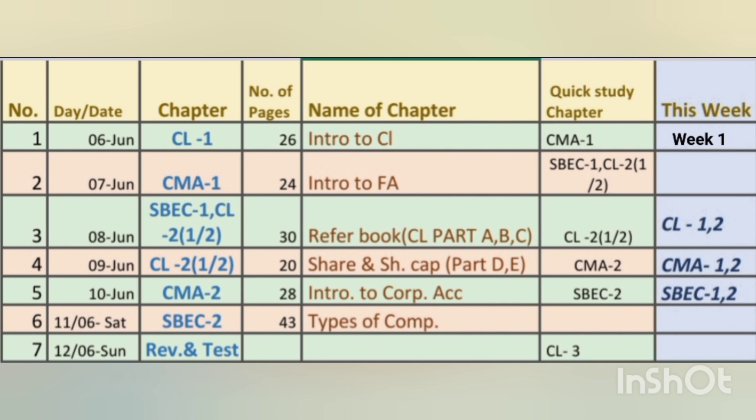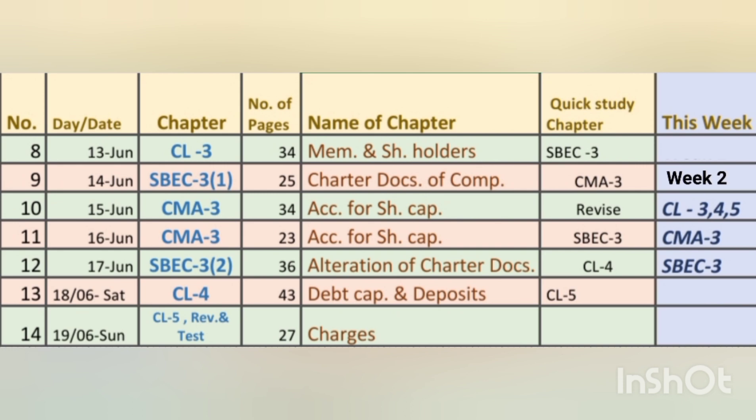In the first week we will be studying six chapters: CL first two chapters, CMA first two chapters, and SBC first two chapters. We will have revision and test of all these chapters at the end of the week. The timetable includes the number of days, dates, Saturday and Sunday, chapter names, chapter numbers, total number of pages for each chapter, and the chapter to have a quick revision on that day. For the second week we will be studying around five chapters.